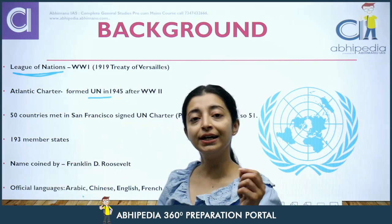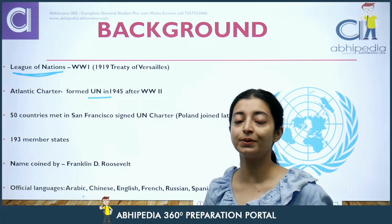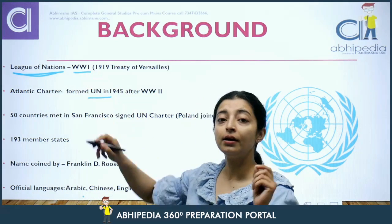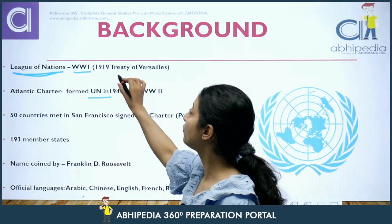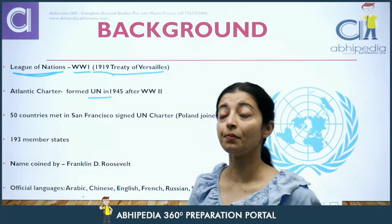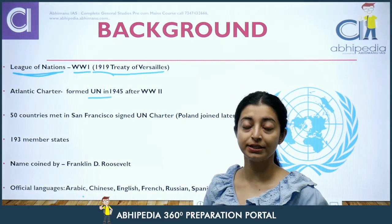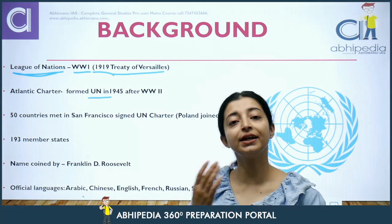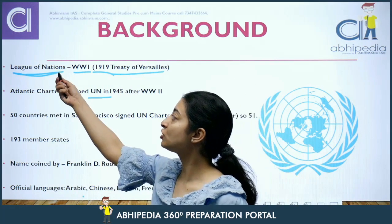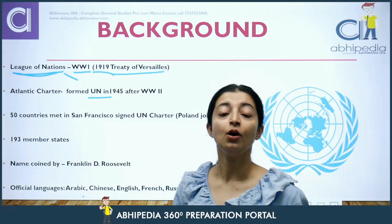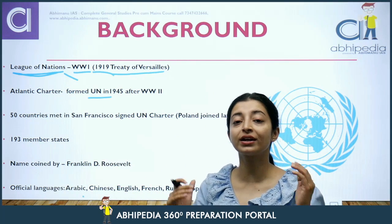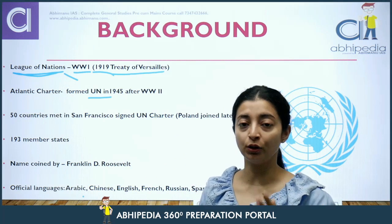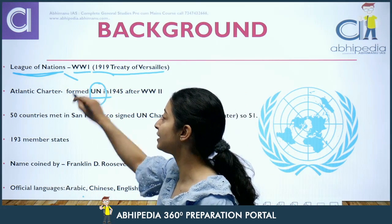This was not the first such body. A similar body had existed before — it was called the League of Nations. The League of Nations was formed after World War I, as a part of the Treaty of Versailles in the year 1919, with the aim of maintaining world peace and security. But World War II happened, and the League of Nations lost its prominence because it failed to prevent war. So a new body called the United Nations was formed.